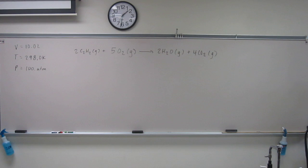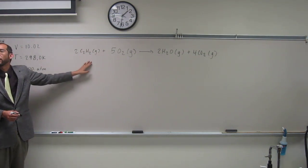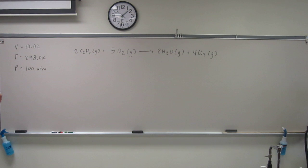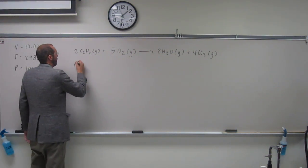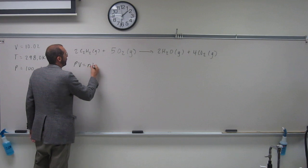The other thing we have to remember is the ideal gas equation in order to do this. Why? Because we need to know the number of moles of acetylene that we're starting with. Acetylene is this C2H2. So what is the ideal gas law? PV equals nRT.